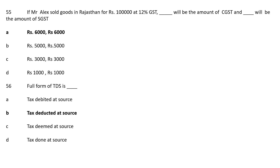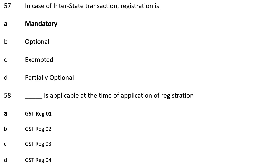Question 56: Full form of TDS is — Option A: Tax Debit at Source; Option B: Tax Deducted at Source; Option C: Tax Deemed at Source; Option D: Tax Done at Source. The correct answer is Option B, Tax Deducted at Source. Question 57: In case of intrastate transaction, registration is — Option A: Mandatory; Option B: Optional; Option C: Accepted; Option D: Partly. The correct answer is Option A, Mandatory. In case of intrastate transaction, registration is mandatory.